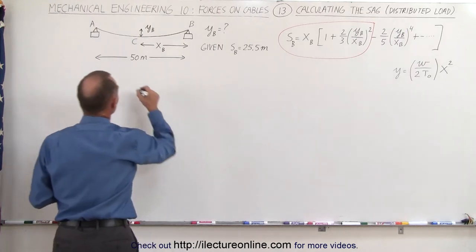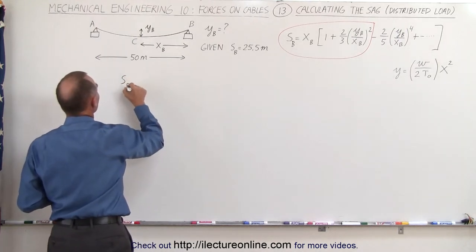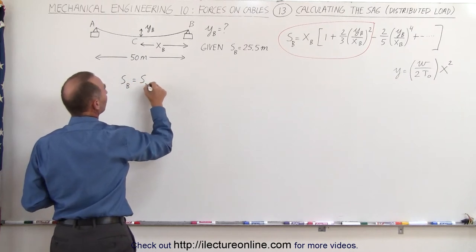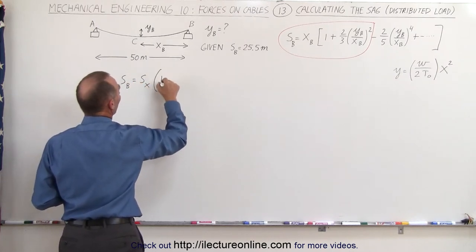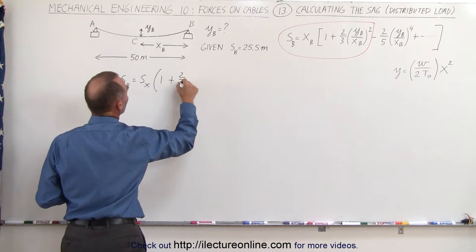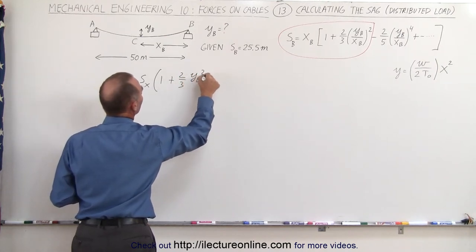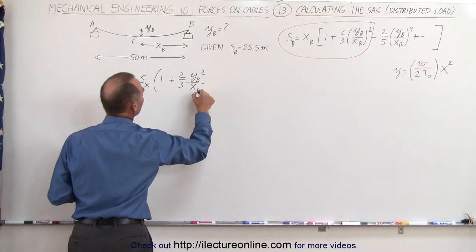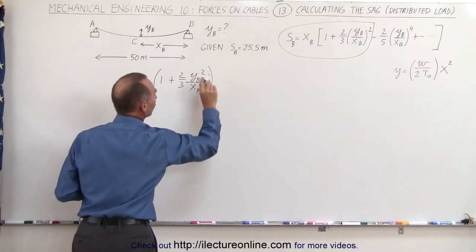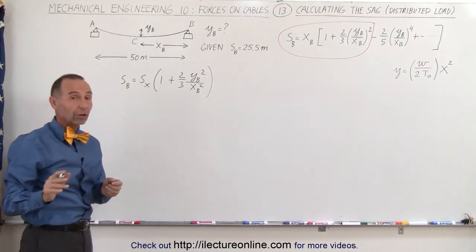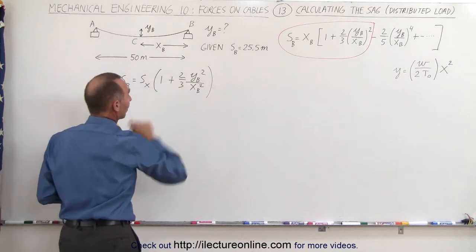We can see here, algebraically, we get S sub B is equal to S sub X times the quantity one plus two-thirds times Y sub B squared divided by X sub B squared. And we're going to ignore everything after that. And what we're trying to do here is solve for Y sub B.